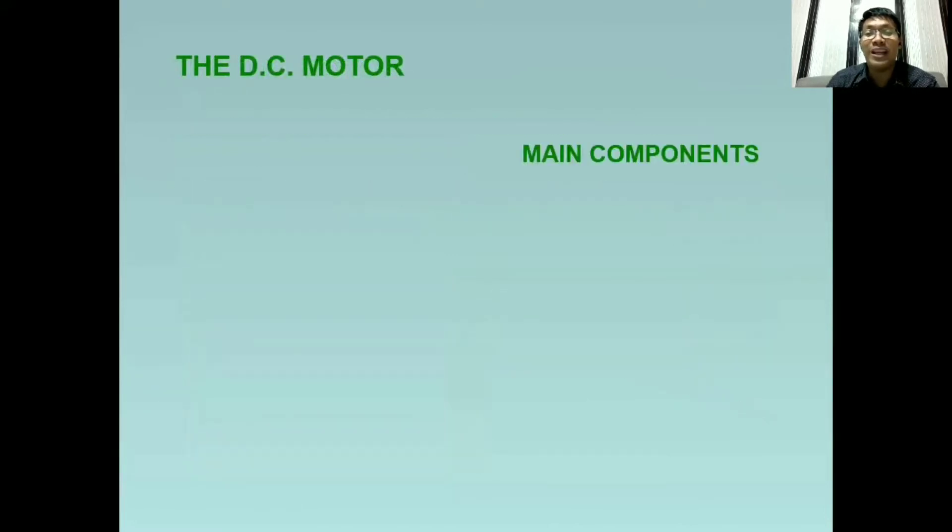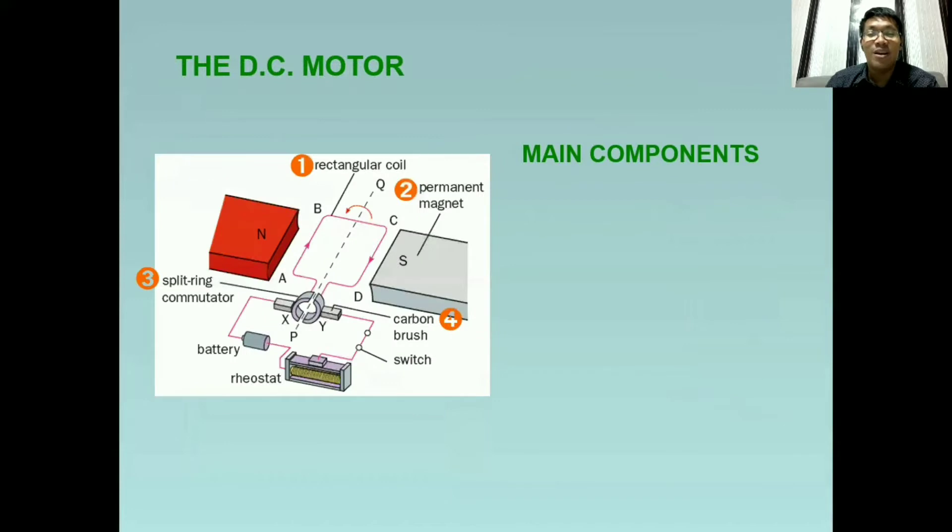So una, alamin muna natin ang mga components na ito. Meron tayong apat na primary components ng DC motor. So the first one is the rectangular wire coil. At ito yun, yung kulay pink sa ating diagram.